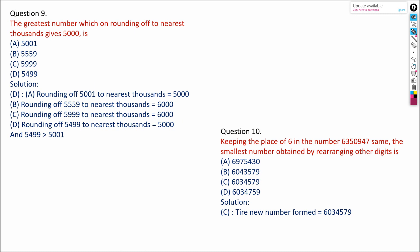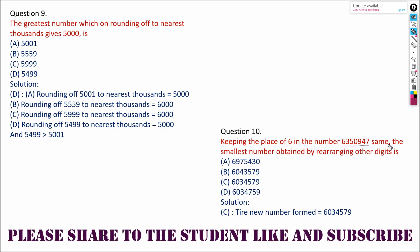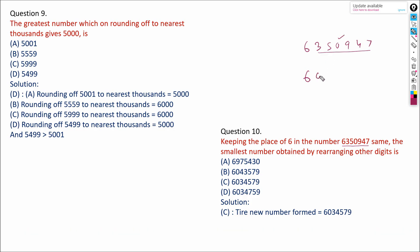Keeping the place value of 6 the same, find the smallest number by rearranging the other digits. The given number uses digits 6, 3, 5, 0, 9, 4, 7. Keeping 6 in its position, we arrange the remaining digits in ascending order: 0, 3, 4, 5, 7. So our answer is the smallest possible number formed this way.